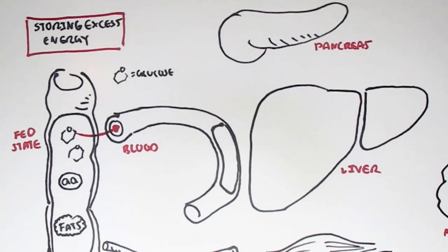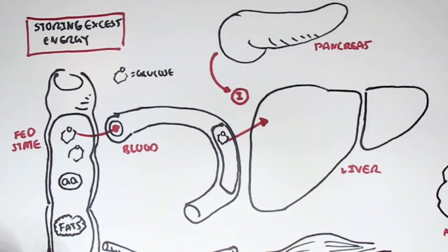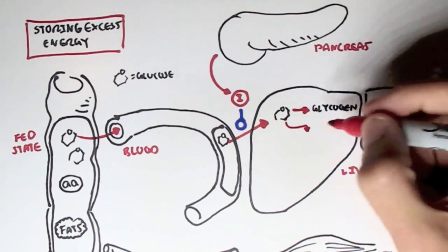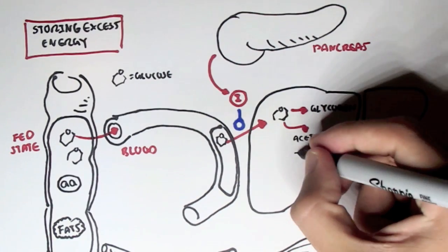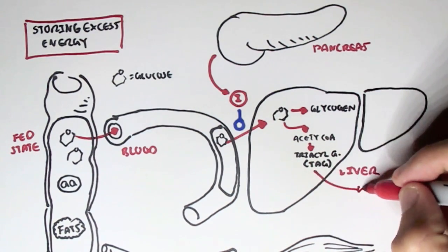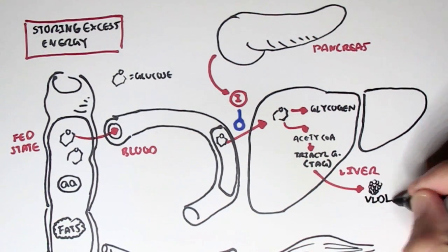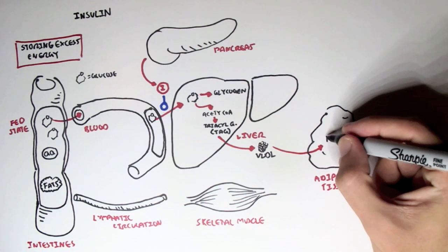Glucose will be absorbed by the blood and the pancreas will then secrete insulin. Insulin will promote the uptake of glucose from the blood into the liver, promote the conversion of glucose to glycogen (the storage unit of glucose), promote the conversion of glucose to pyruvate and then to acyl-CoA by glycolysis, promote acyl-CoA to triacylglycerols, which can then be packaged into very low density lipoproteins and stored as triacylglycerol in adipose tissue.